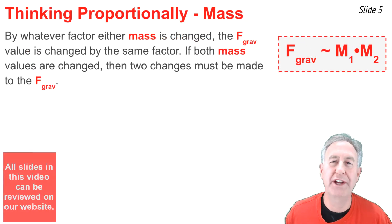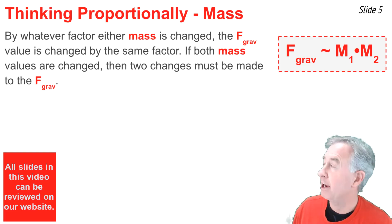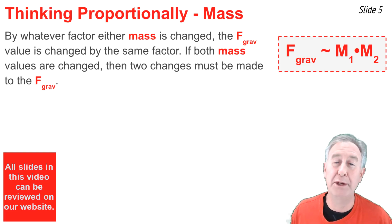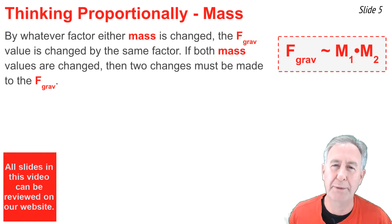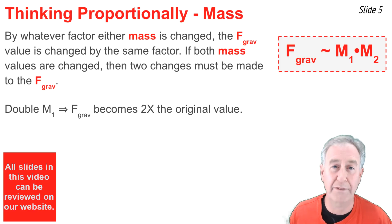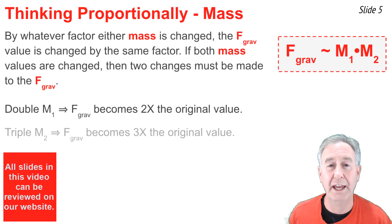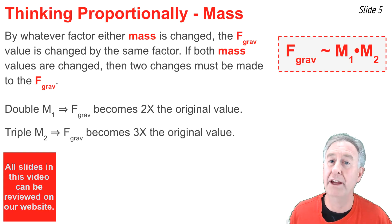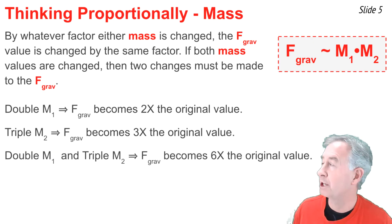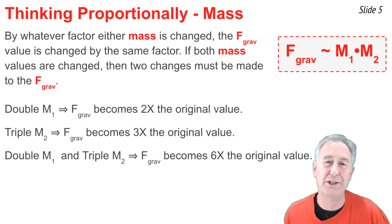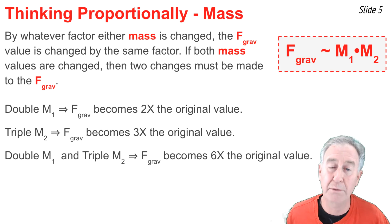When it comes to the proportionality statement about mass, by whatever factor the mass is changed, the F-grav is changed by the same factor in the same direction. If a change is made to both masses, two changes must be made to F-grav. For example, doubling M1 would cause F-grav to double, and tripling M2 would make F-grav three times larger. If both changes happen together — doubling M1 and tripling M2 — then F-grav would become six times larger.